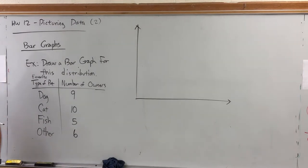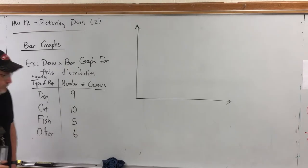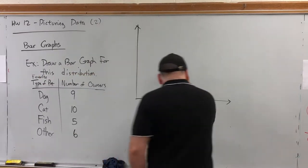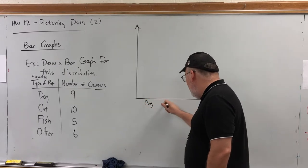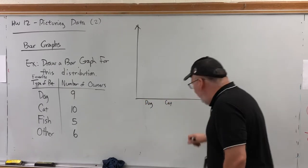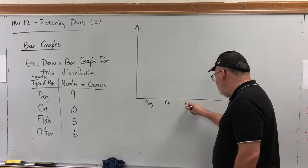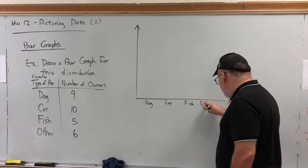The trick to a good picture is to make sure that it conveys as much information as possible and needs little explaining. So, for example, on the horizontal axis, we're going to represent all the different answers people gave. Dog, cat, fish, and other.